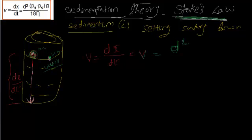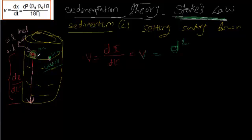Now let's also look at the density difference. If we place an oily droplet in water, what happens? Because the density of water is higher than the density of oil, the oil will simply float on top of the water — it will not settle. So that means the rate of sedimentation is proportional to the density difference between the particle and the dispersing medium.